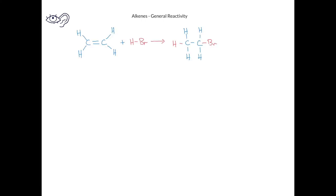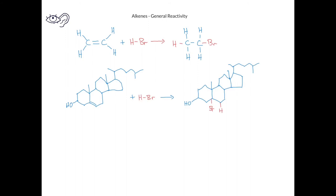Let's look at a few alkene reactions and see if we can draw any conclusions about how these alkene reactions take place. To begin with, let's look at the reaction of ethylene, C2H4, reacting with hydrogen bromide. In this reaction, we see that the hydrogen from hydrogen bromide is added to one of the carbons and the bromide ion is also added, except to the other carbon that was part of the double bond.